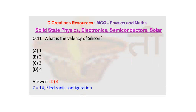We find that in the last shell there are going to be 4 electrons. So valency of silicon is 4.